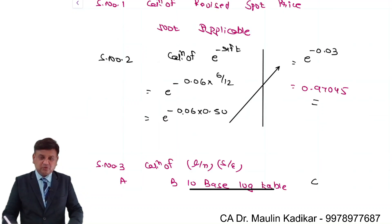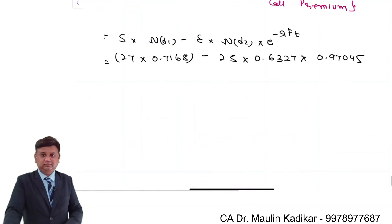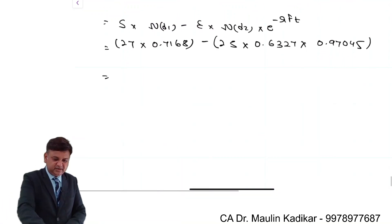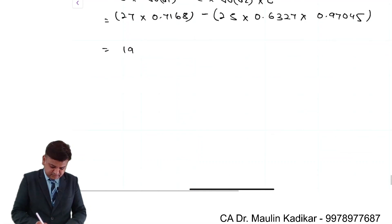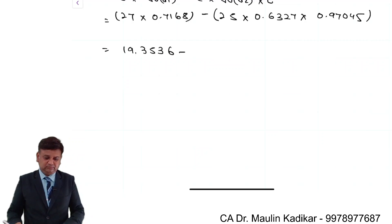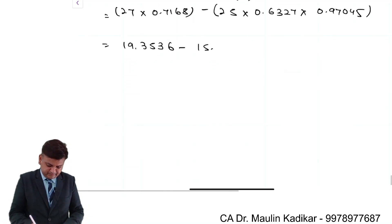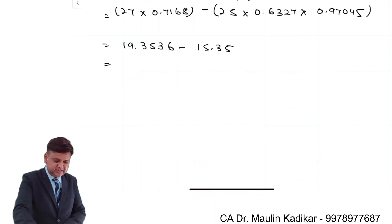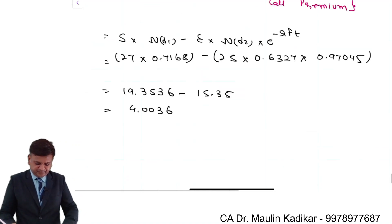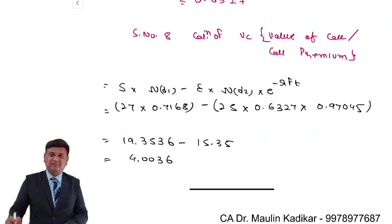In step number 2 we computed E raised to negative RF times T. So, 27 multiplied by 0.7168 equals 19.3536. Then 25 multiplied by 0.6327 multiplied by 0.97045. The answer is 19.3536 minus 15.35, giving 4.0036. We can say that the call premium is approximately 4 rupees. That is the way the call premium can be found.